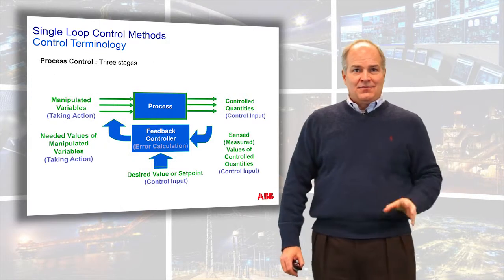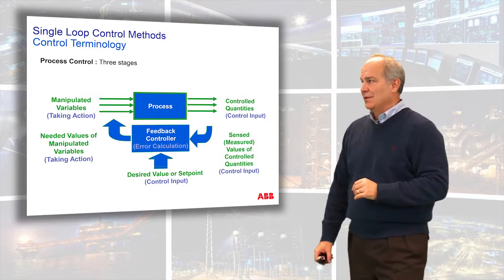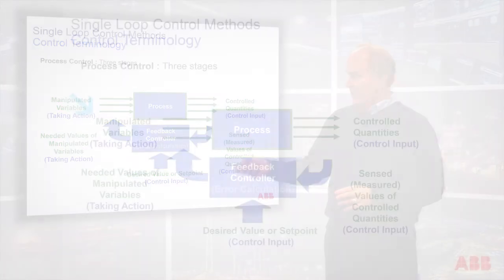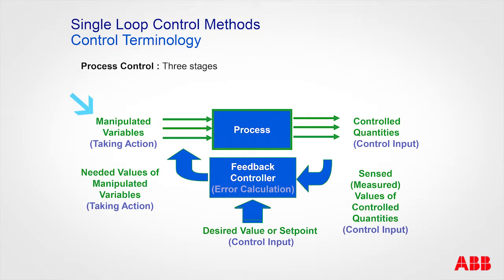This is an old picture from a book I still like. It shows our manipulated variables — the manipulated variable is the final control element, or FCE. The FCE can be an actuator, a drive, a motor, a throttle, a steering wheel — anything that causes something to move. Your process can be the temperature of a room, the flow through a pipe, or any measurement of a process.